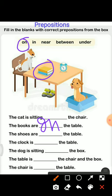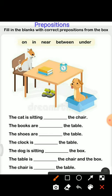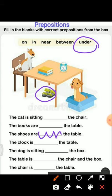Next one: the shoes are ___ the table. Where are the shoes? Here are shoes and these shoes are under the table. So we will choose the correct word from the box and write here: under. U-N-D-E-R, under. The shoes are under the table.